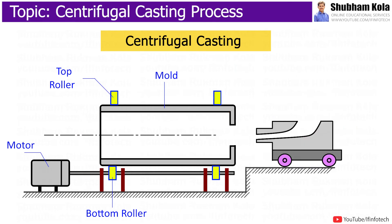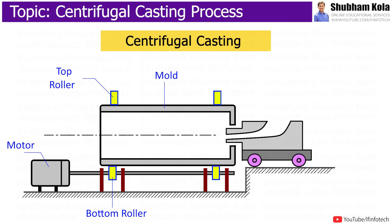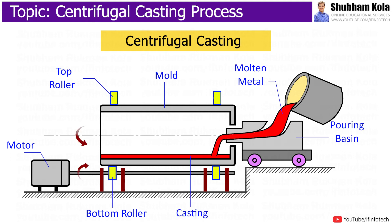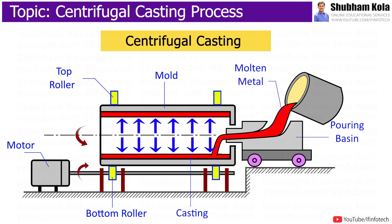The centrifugal casting process begins with molten metal being poured into a pre-heated spinning die. The die may be oriented on either a vertical or horizontal axis depending on the configuration of the desired part. By spinning the mold while the molten metal is poured into it, centrifugal force acts to distribute the molten metal in the mold at pressures approaching 100 times the force of gravity.